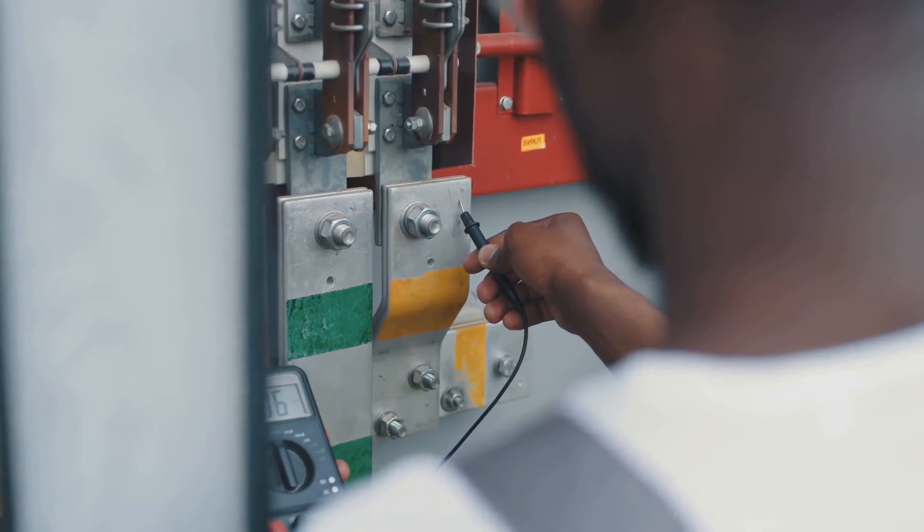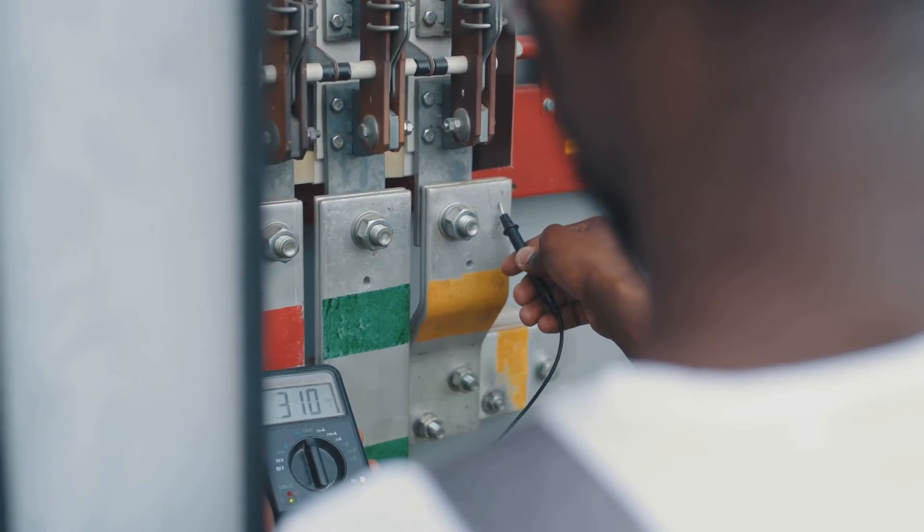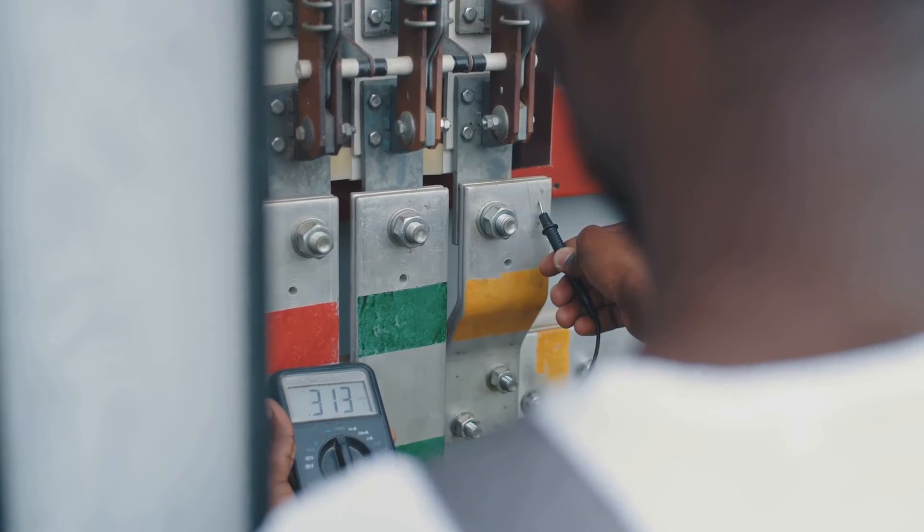By adjusting the power supply, you can increase the current and observe the corresponding change in the multimeter reading.